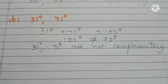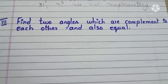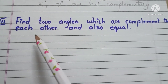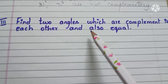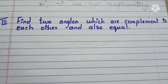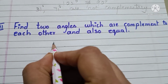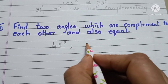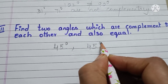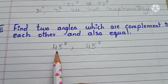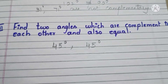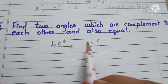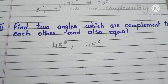Okay. Now, third one: find two angles which are complement to each other and also equal. So, the angles are 45 degrees and 45 degrees. If we add 45 and 45, we get the sum 90 degrees and the two angles are of equal measurement.